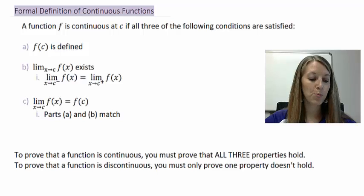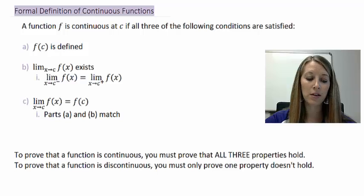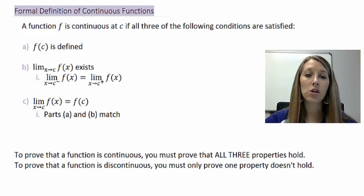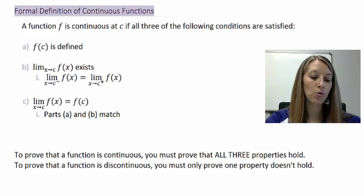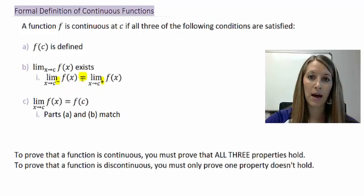The first property is that our function at c is defined. That goes back to college algebra material — our function has to be defined. Part b: the limit as x approaches c of our function f(x) exists. To show that our limit exists, we have to look at the left-hand limit and the right-hand limit and make sure that those meet up in the middle.